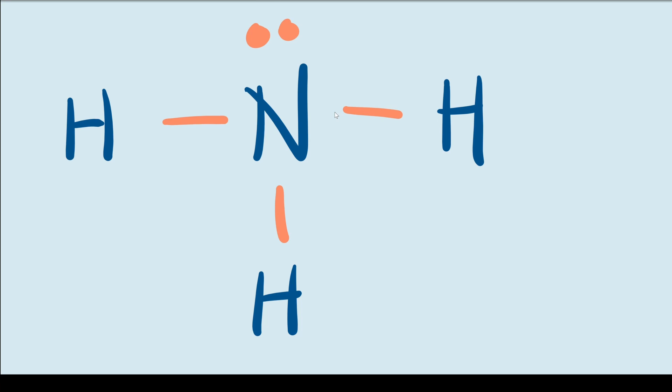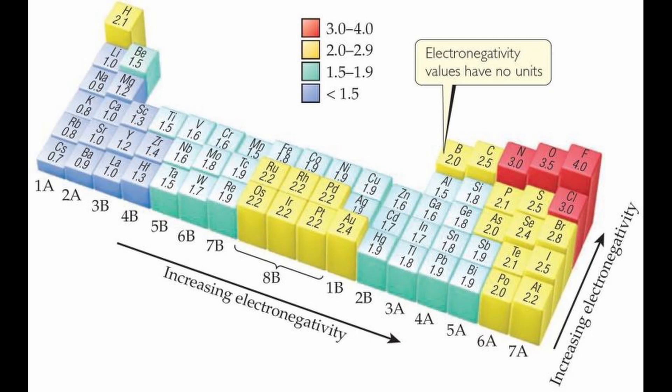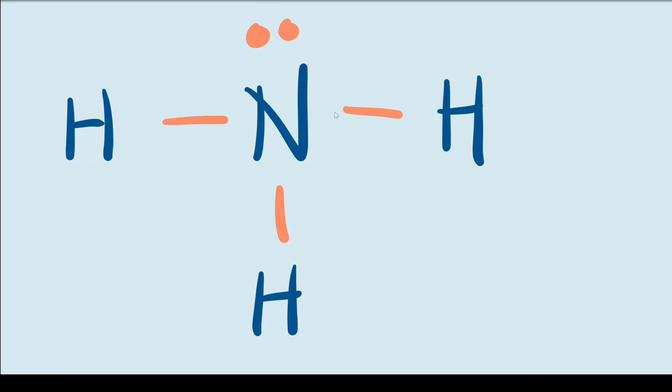To determine if ammonia is polar or not, let's check out the electronegativity table. We can see that nitrogen is 3.0 and hydrogen is 2.1. Since the difference between them is 0.9, the covalent bond between them is polar.